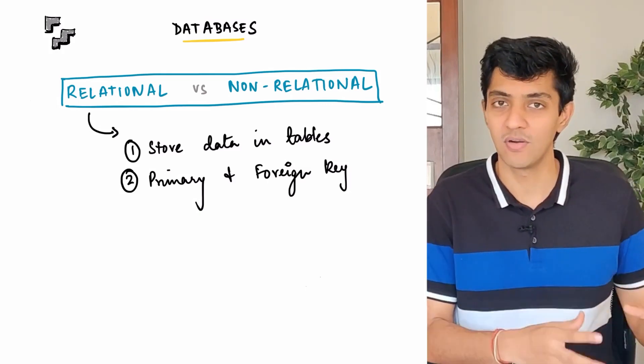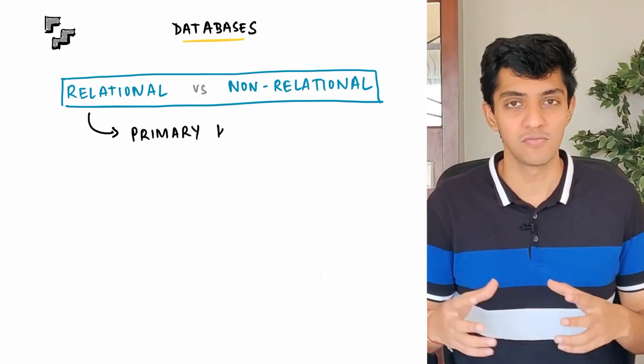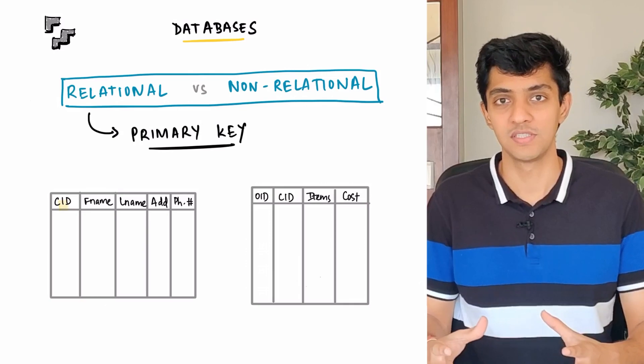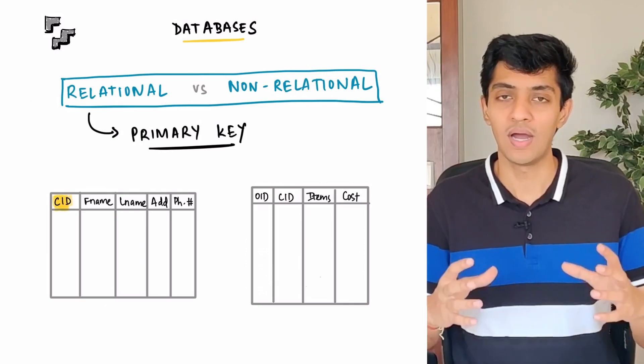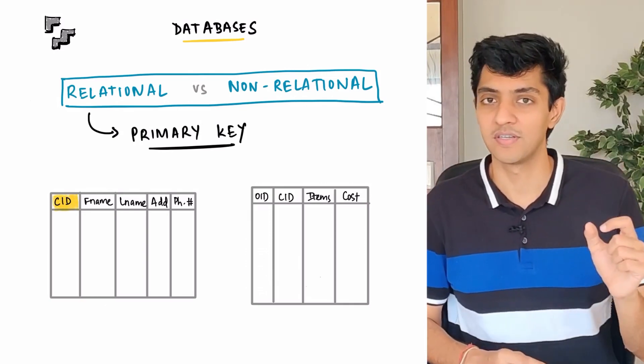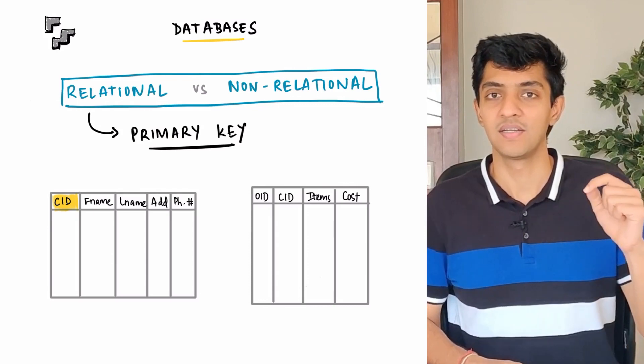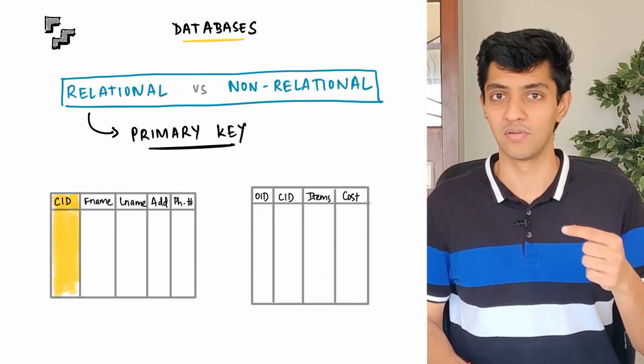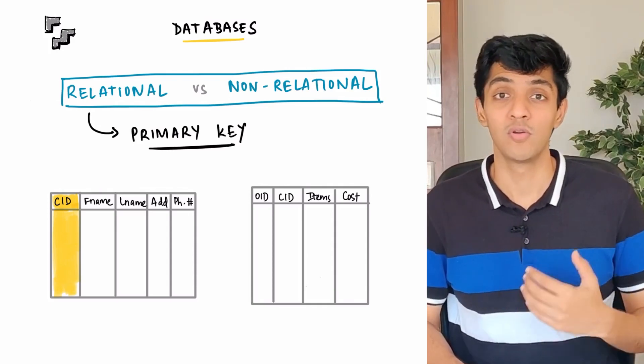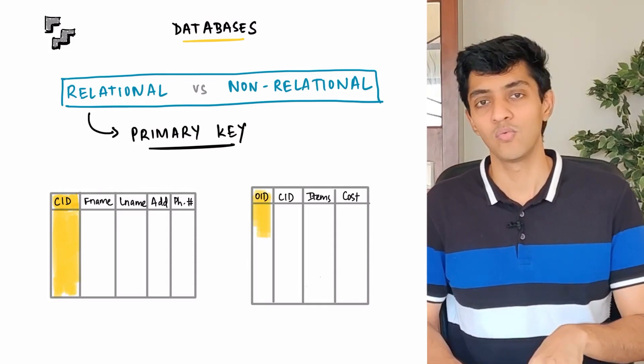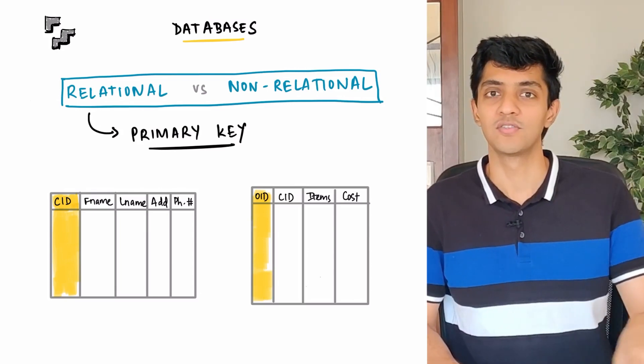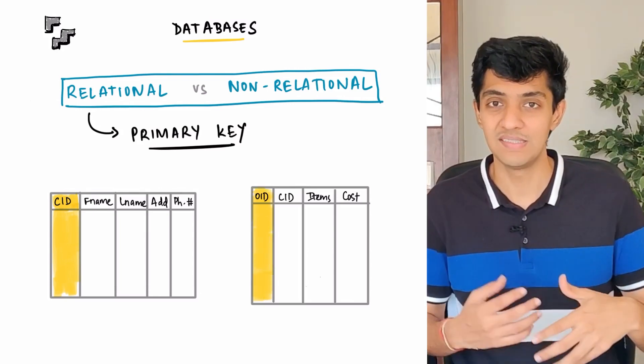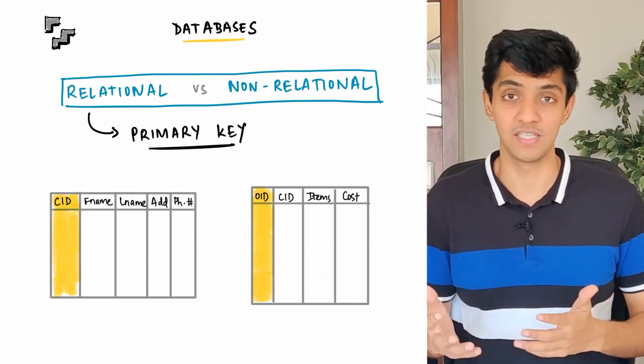Now if we go back to the e-commerce example that we had, in order for you to store the customer information within a certain table, you had to have one unique identifier for every record, meaning that you had to have one unique identifier for every customer who actually places that particular order. Now in our case, it's going to be the customer ID. Now the reason why you want to have a primary key is because it's going to help you a lot in terms of easy retrieval and easy updation of data.